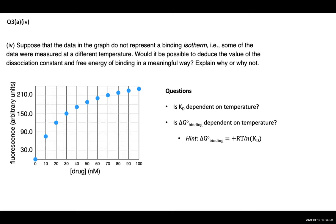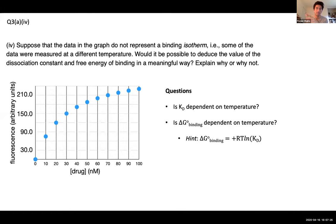A student asked for clarification on why KD depends on temperature — suggesting it might be because adding heat decreases activation energy and shifts K. A tutor added that whenever you have a binding event, there is an entropy term associated with it: a free drug has many possible configurations, but when bound to a protein it is much more restricted. So there is a temperature-dependent entropy contribution factoring into the binding equilibrium, which supports KD being temperature dependent.